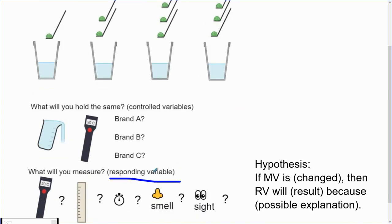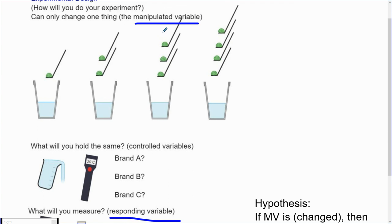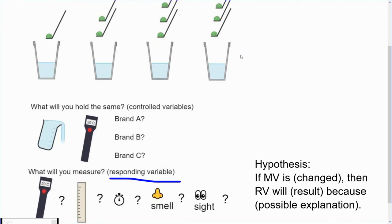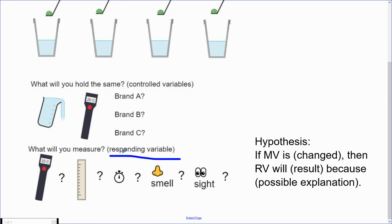The only thing that should change our responding variable should be our manipulated variable. As a reminder, there should be only one manipulated variable in your experiment. In our example here, it's the scoops of the solid. And you should measure only one responding variable. For this case, it could be the amount of time the bubbles are seen in the reaction or any smells or any sight. In some experiments, you may see two different variables and you'll need two different observation tables to record the two different observations.